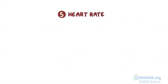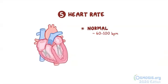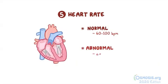Finally, there is heart rate. A normal heart rate of 60 to 100 beats per minute allows adequate time for the ventricles to fill. Abnormal rates such as tachycardia reduce filling time, eventually decreasing preload.